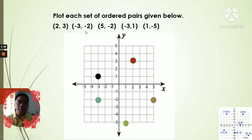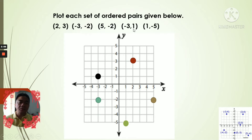For negative three negative two, both are negative so it's on the third quadrant. For five and negative two, x is positive and y is negative, so it's on the fourth quadrant. For negative three one, x is negative and y is positive — that's the second quadrant. And lastly, one negative five — same as the previous, that is in the fourth quadrant. Remember that ordered pairs are always x coordinate then y coordinate.